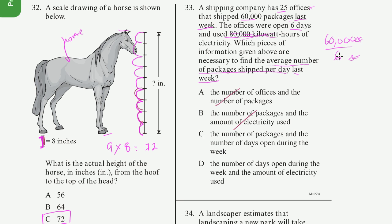The number of packages and the number of days opened during the week and the amount of electricity. No, this had nothing to do with the electricity. So our choice is C.